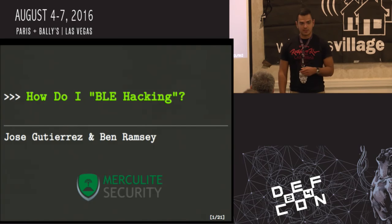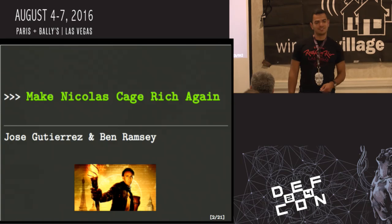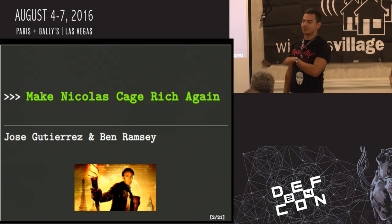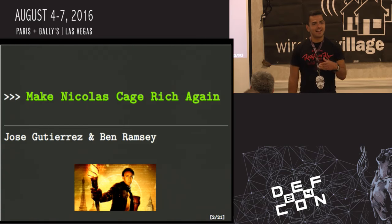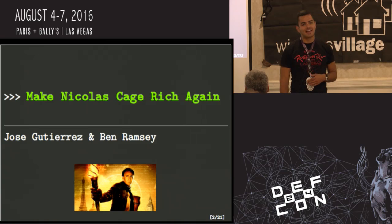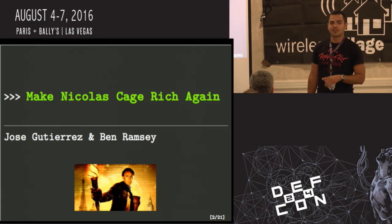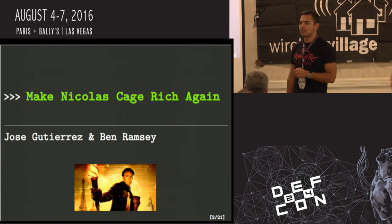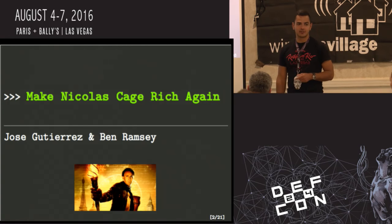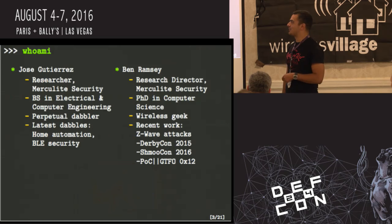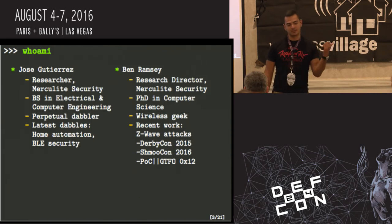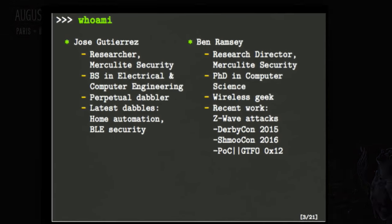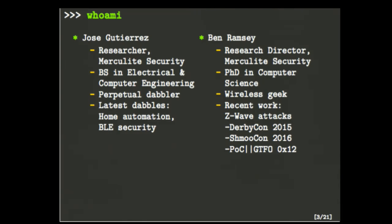My name is Jose Gutierrez. The title of my presentation is actually 'How Do I BLE Hacking,' but really, truly underground, it's called 'How to Make Nick Cage Rich Again,' and I'll tell you why in a second.